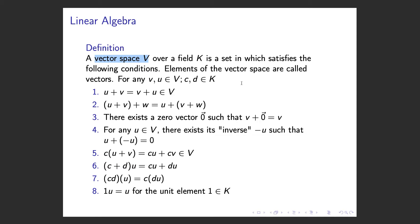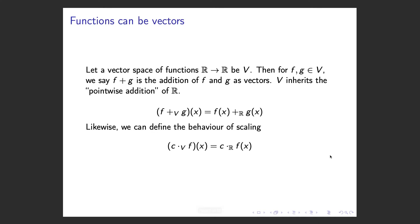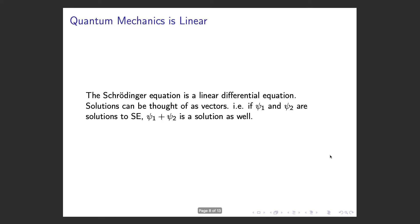Any set of elements that satisfies these eight properties can be called a vector space, and the tools of linear algebra can be applied to that set of elements. The upshot of this is that quantum mechanics is linear, and hence we can use the tools of linear algebra in quantum mechanics.